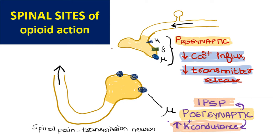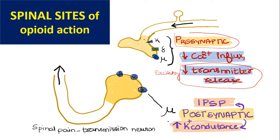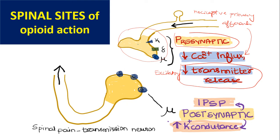Coming to the spinal actions of opiates: in the spinal action they reduce the excitatory transmitter release from the presynaptic terminal of nociceptive primary afferents by inhibiting the calcium influx. This reduction in calcium influx is through agonistic activity at kappa, delta, and mu receptors on the presynaptic nerve terminal.